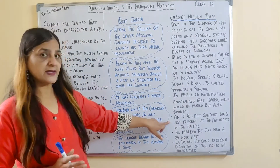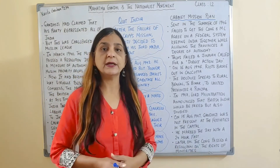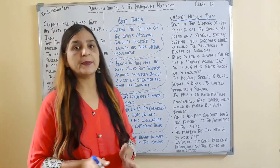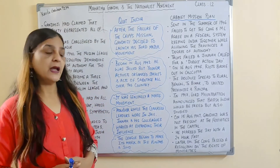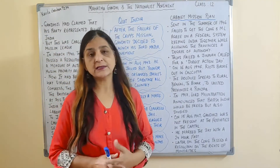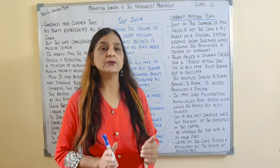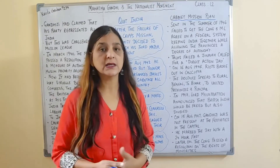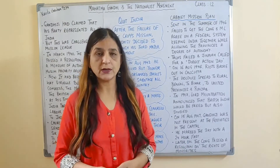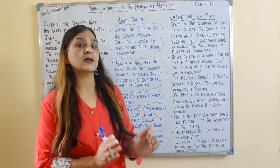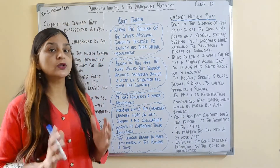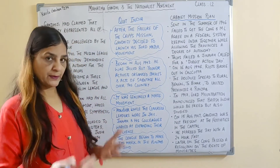On 15th August 1947, India became independent and in Delhi festivities began. But Mahatma Gandhi was not present in the capital and did not participate in these festivities. He mourned the day with a 24-hour fast. While it was a happy day because India was free, for Mahatma Gandhi it was a very sad day — because of the partition and the suffering of the people who had been affected.